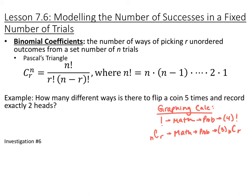Lesson 7.6. We're going to be modeling the number of successes in a fixed number of trials. Some definitions: binomial coefficients is the number of ways of picking R unordered outcomes from a set of N trials. So given N trials, how many different ways can R happen, whatever event R is?